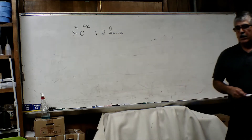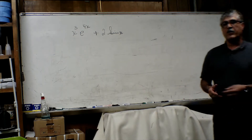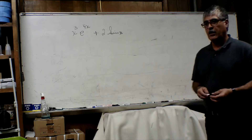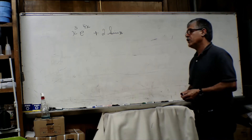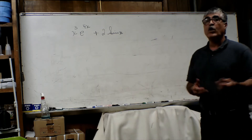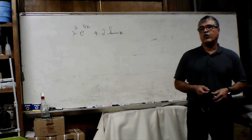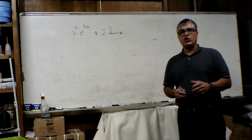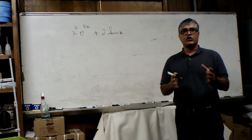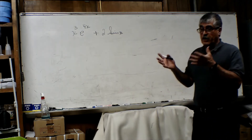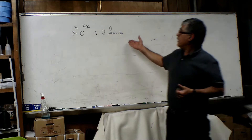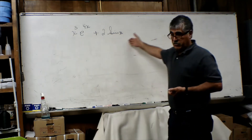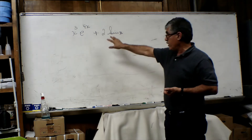A student has contacted me. He's solving a higher-order non-homogeneous differential equation and he wants to know what he should assume as a particular solution for the non-homogeneous portion of the equation he's solving. This is the non-homogeneous portion — this is the right side of his equation.